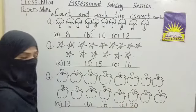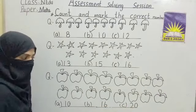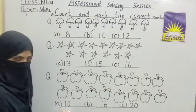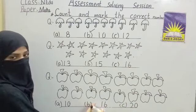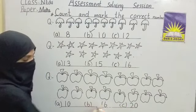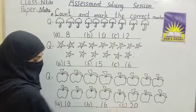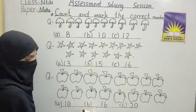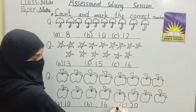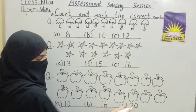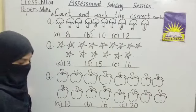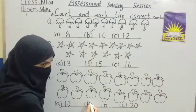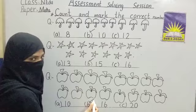How many apples are there? Sixteen. Let's see the options. Option A: ten. Option B: sixteen. Option C: twenty. How many apples? Yes, sixteen. Tick option B — sixteen.